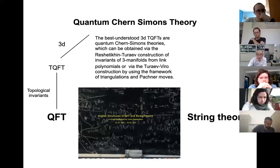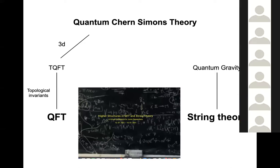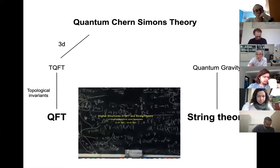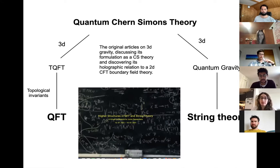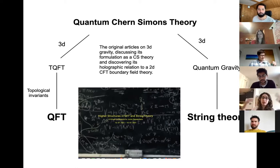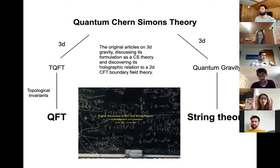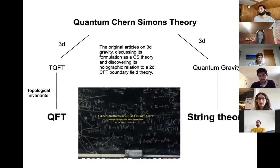From the string theory side, string theory is one of the more promising models in quantum gravity, and three-dimensional gravity has a connection with Chern-Simons theory. In the original articles on three-dimensional gravity, there was a formulation as Chern-Simons theory, and also a holographic relation to two-dimensional conformal field theory — similar to the AdS/CFT connection — exists between Chern-Simons theory as two-dimensional gravity and 2D CFT as its boundary.